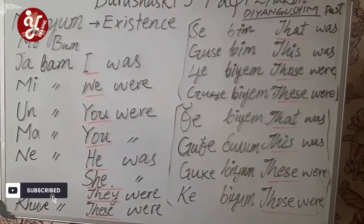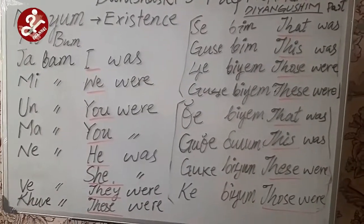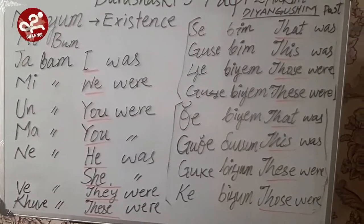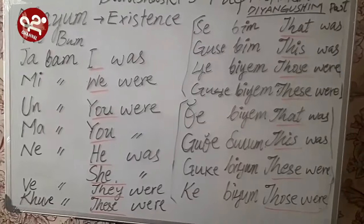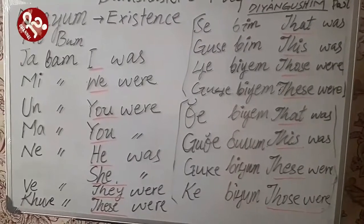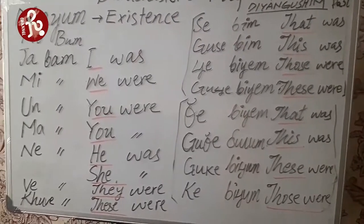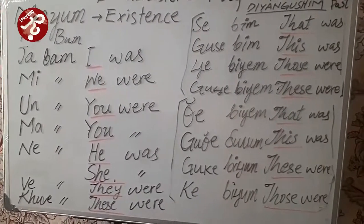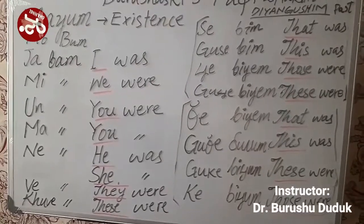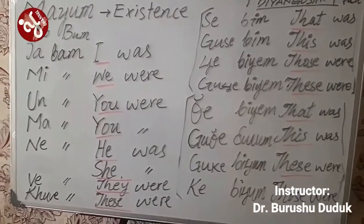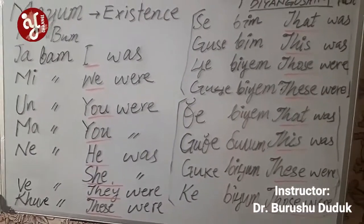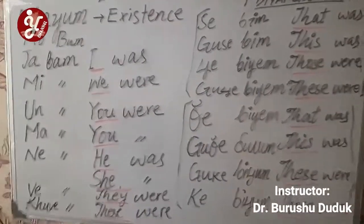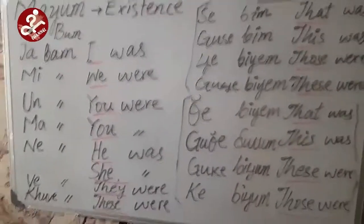In other languages like English there are very few helping verbs. In Urdu also there is 'Tha', 'Thi', 'Then', etc. So in English: 'was' and 'were'. Now we are talking about the past.